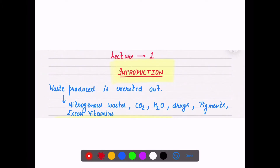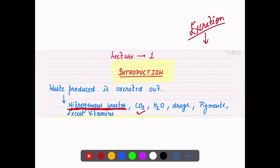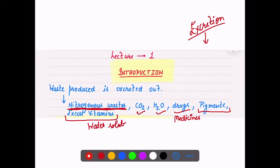When we talk about excretion, it means waste material is getting removed out from our body. The question is: which type of waste are we talking about? The main waste we will focus on is nitrogenous waste. But CO2 is also a waste, excess water is also a waste, drugs and medicines we take are also released during excretion, pigments not necessary for our body are also released, and excess water-soluble vitamins are also excreted out.